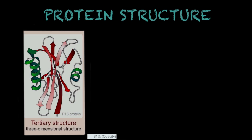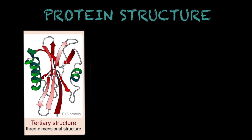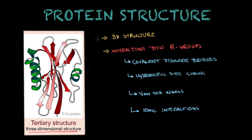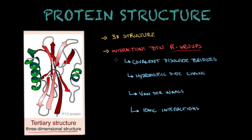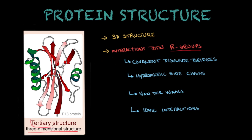Now we move on to the tertiary structure, which is when the protein starts to clearly form a three-dimensional structure. An important aspect of tertiary structure is the interactions between the R groups of the amino acids. There are 20 different amino acids that share the same backbone but have different R groups, which makes them different. These R groups interact with one another through various types of chemical interactions, helping define the tertiary structure.